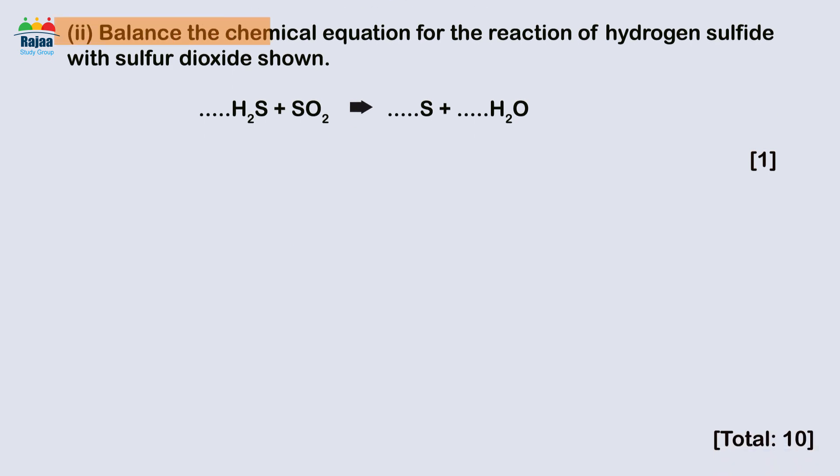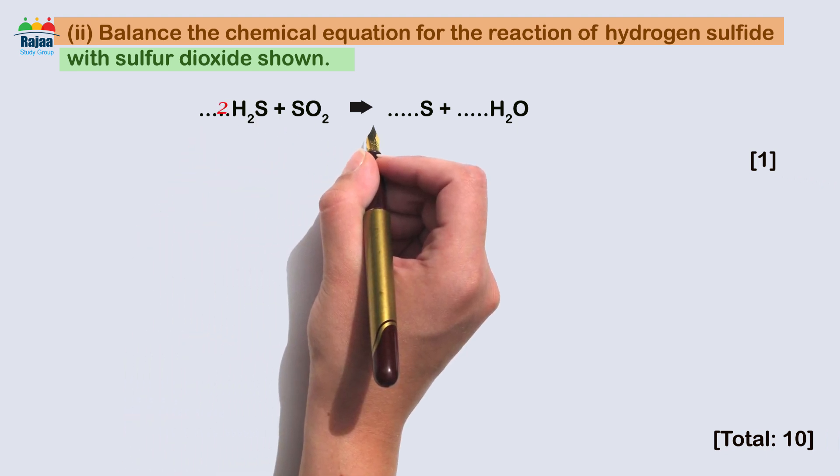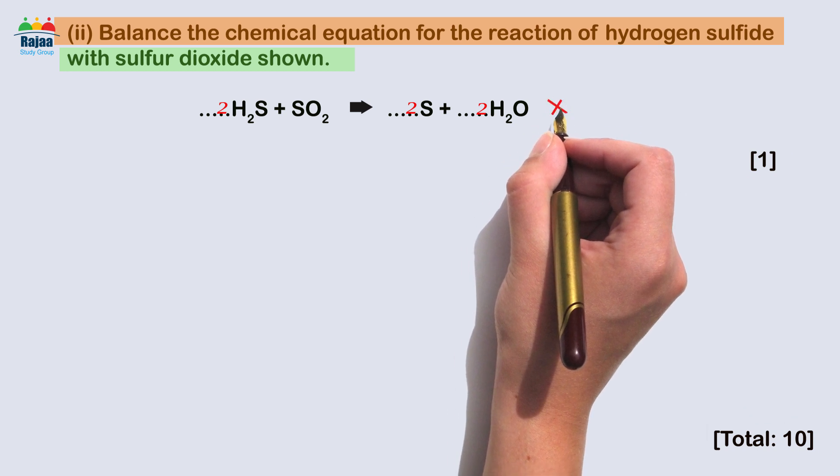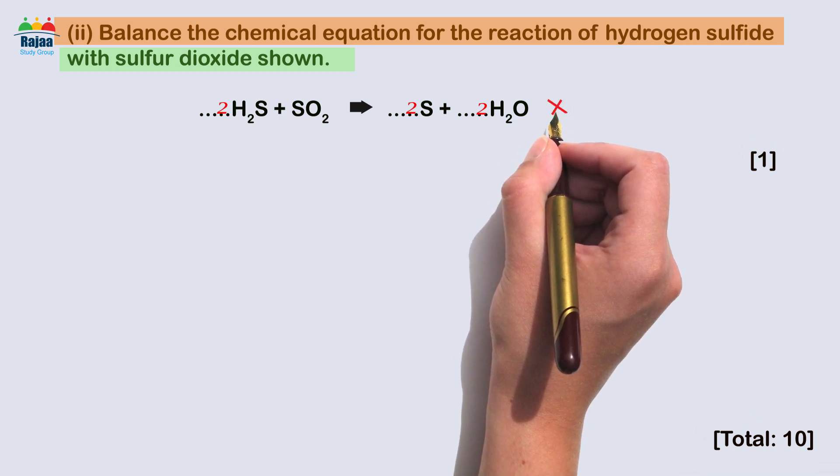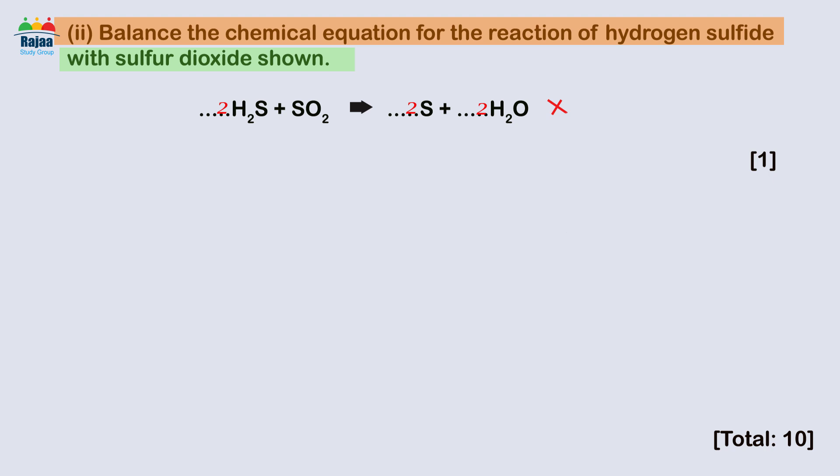How to balance the chemical equation for the reaction of hydrogen sulfide with sulfur dioxide: 2H2S + SO2 → 2S + 2H2O - oh no, this was common mistakes answer. The S was often preceded by a two instead of a three. Presumably, this was because students omitted to count the S in SO2.